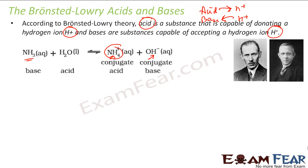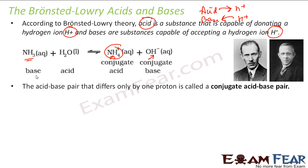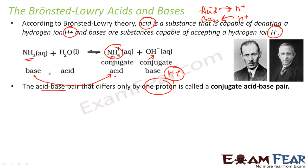What is conjugate acid and base? If you have a base and it forms a conjugate acid, they differ only by one H+ ion. That's why we say the acid-base pair that differs only by one proton — H+ ion — is called a conjugate acid-base pair. For example, NH3 and NH4+ are a conjugate acid-base pair. H2O and OH- also differ only by H+, so they are also a conjugate acid-base pair.